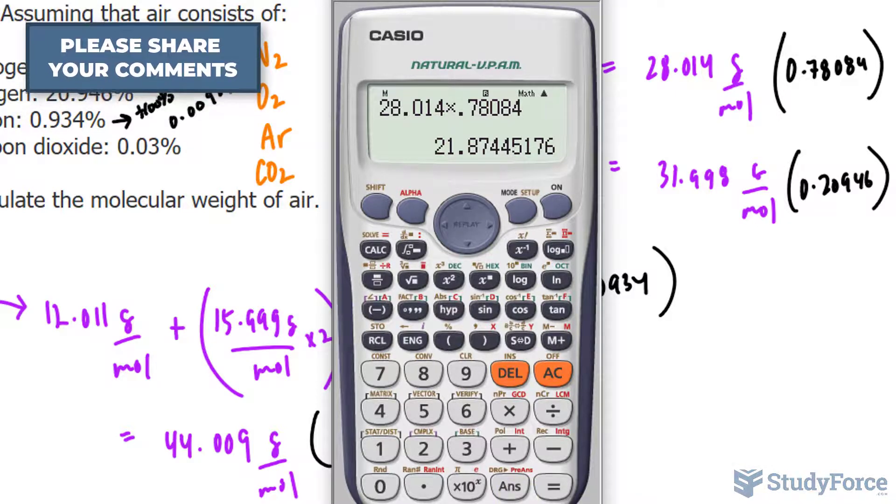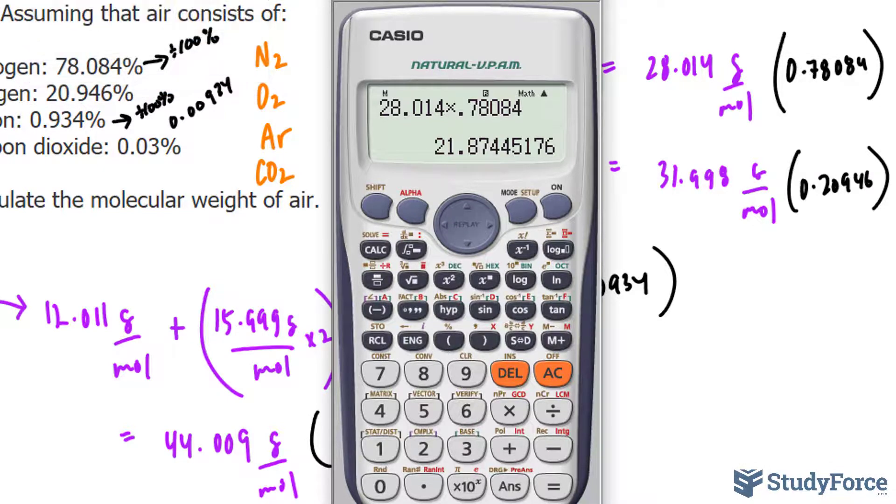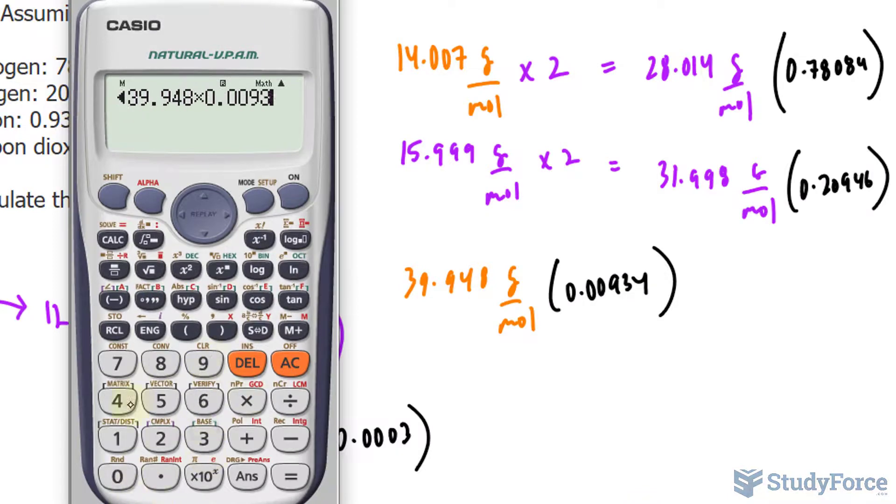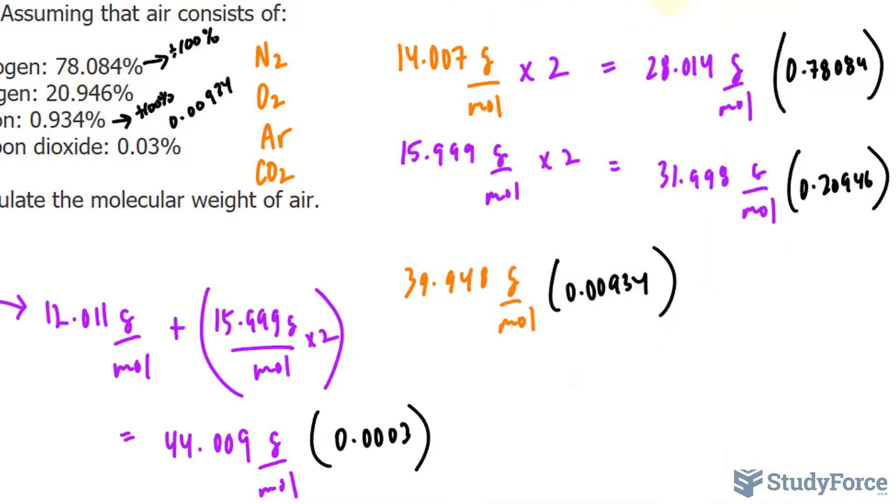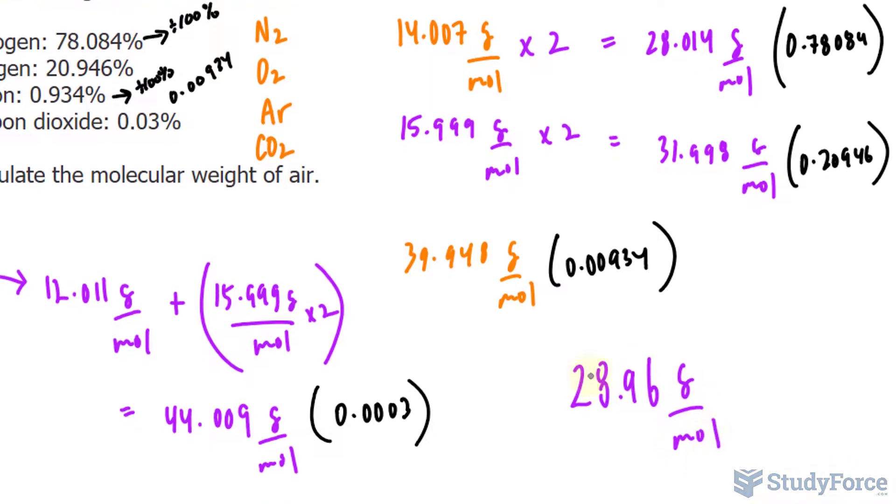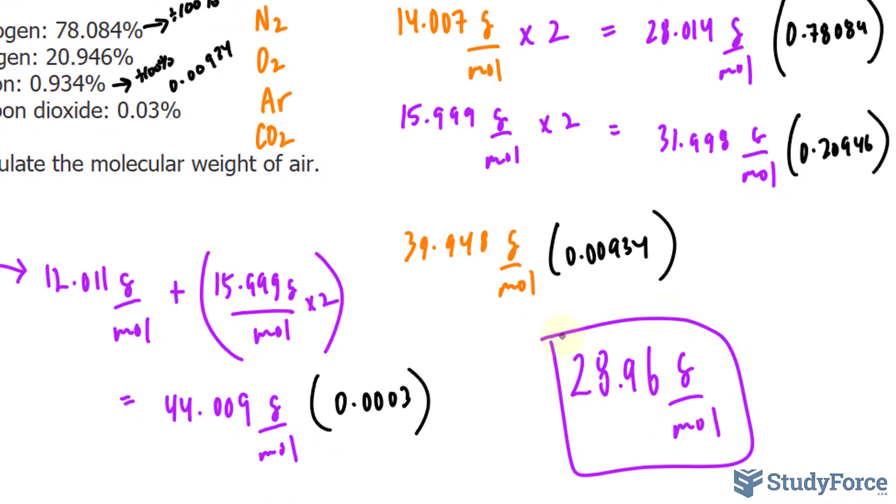Make sure that your final answer comes to two significant figures after the decimal place. If you do it correctly, you should end up with a value that's roughly 28.96 grams per mole, the molecular weight of the air that we breathe.